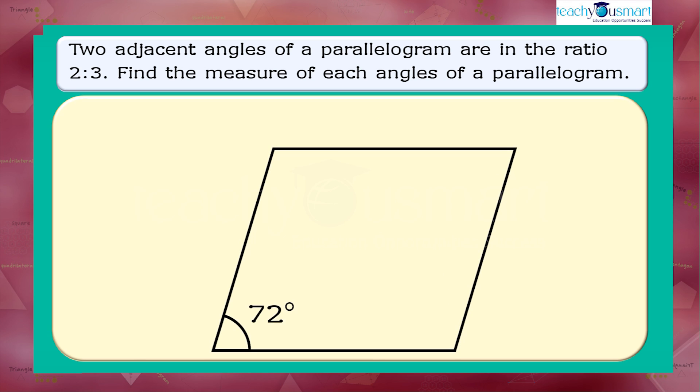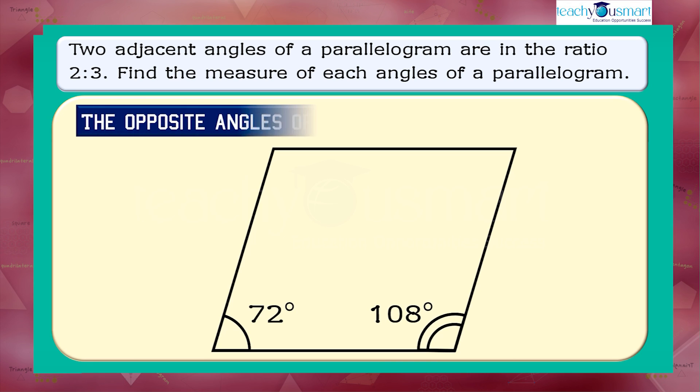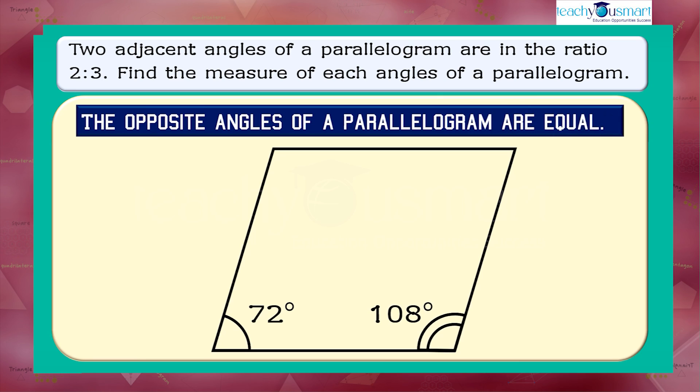The adjacent angles are 72 degrees and 108 degrees. We know the opposite angles of a parallelogram are equal. Therefore, the other angles of the parallelogram are 72 degrees and 108 degrees.